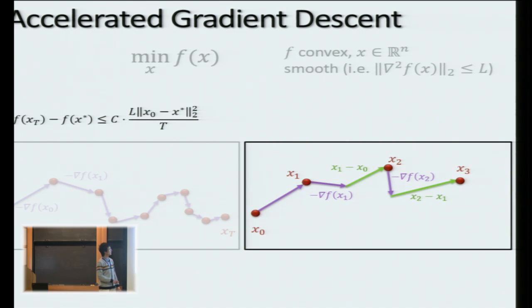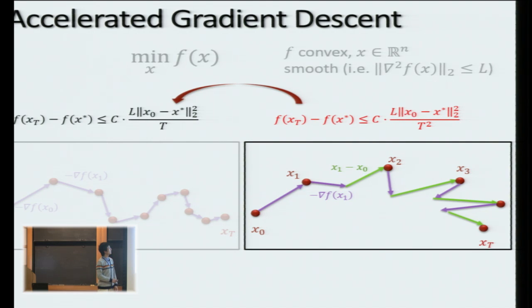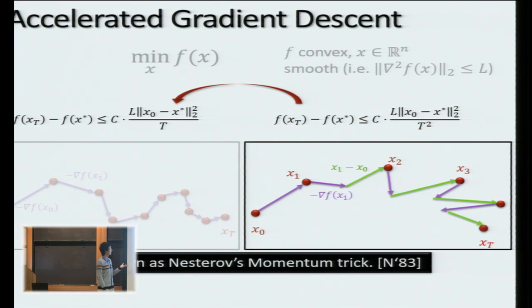in the second iteration, it tries to also move in the direction of x1 minus x0 and call this new point x2. And then in the new iteration, it does the same thing, negative gradient, the momentum, and on and on. So this is known as accelerated gradient descent, and it converges quadratically faster than gradient descent. This was not my discovery. It was Nesterov's discovery, like, back to more than 30 years ago. Very smart. And known as Nesterov's momentum trick.